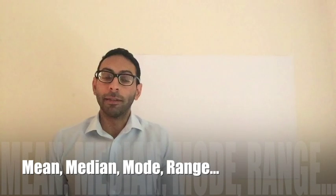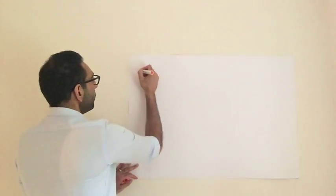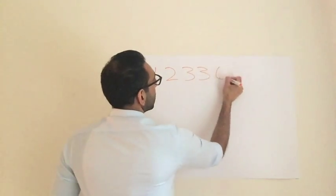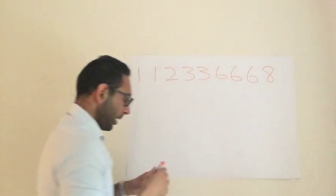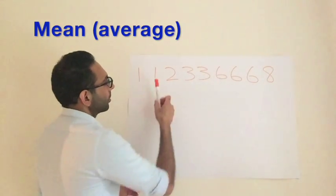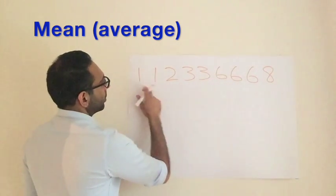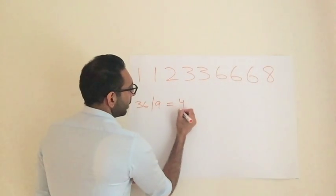So we're going to start off with what most people think is simple. When you get a list of numbers or results, people often get confused between median, mode, mean, and range. So let's clarify those quickly. We get a set of numbers: 1, 1, 2, 3, 3, 6, 6, 6, 6, and 8. If they're asking you to find the mean, it's very simple - you add all the numbers up. That gives you 36, and you divide by the count, which is 9. So your mean or average is 4.